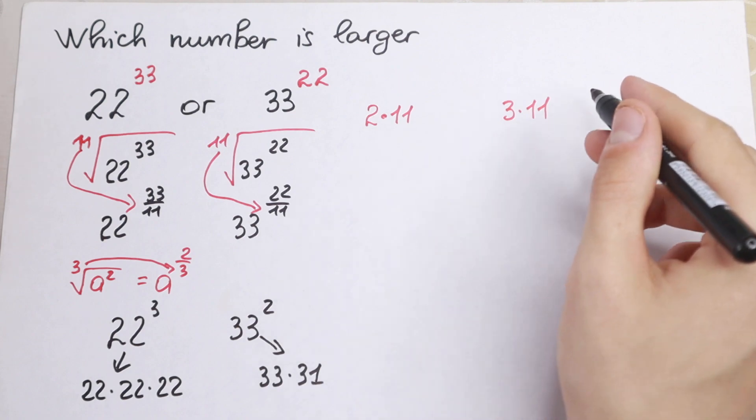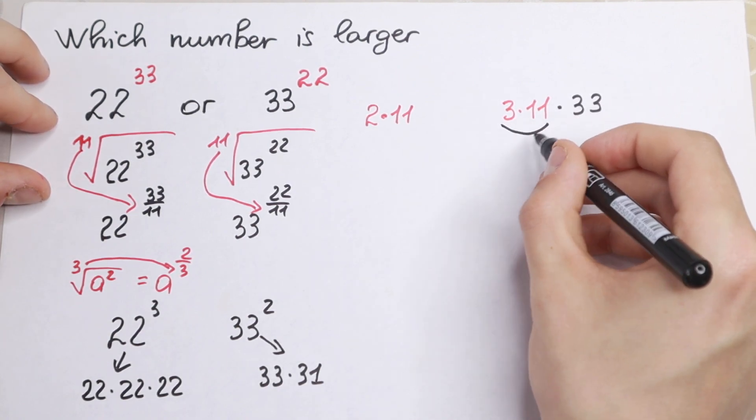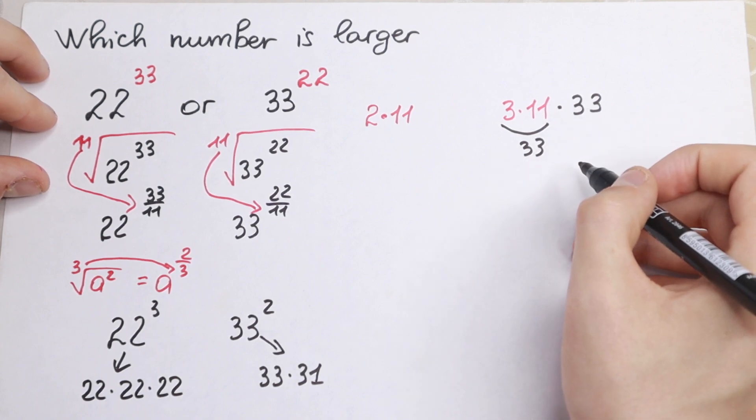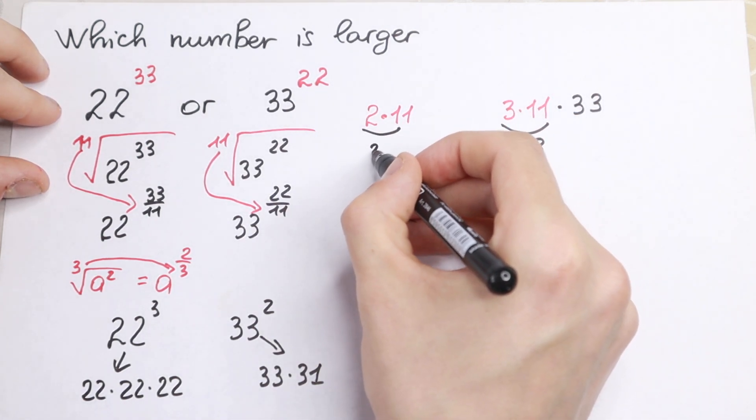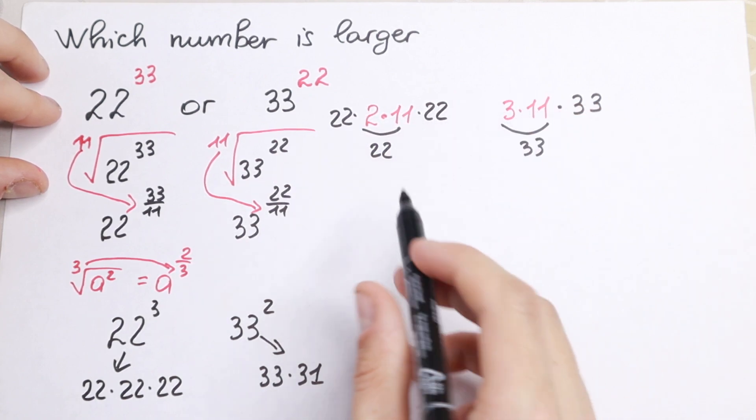So we will have one more 33. This is one 33, this is the second 33. This is one 22 and we will have one right here once more and right here once more. We'll have three parts.